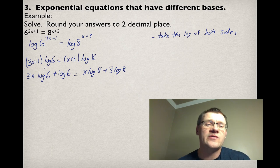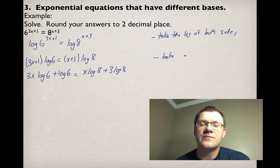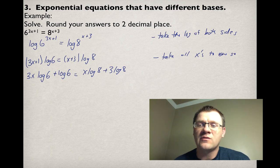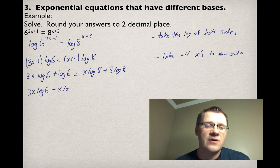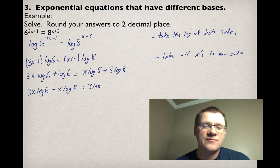What you really want to do is make sure that you can get your x's on one side and everything else on the other. So you want to take all your x's to one side. We're going to move the x's to the left-hand side and we're going to move anything that doesn't have an x to the right-hand side. So this now becomes 3x·log(6) - x·log(8) = 3·log(8) - log(6).